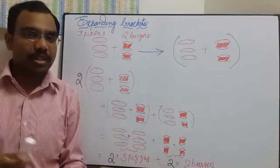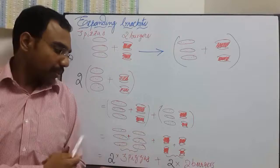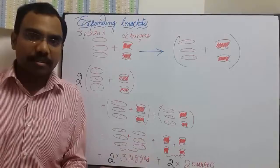Let us consider you have ordered two packets of 3 pizzas and 2 burgers. Mathematically, we can also represent it like this. So two times 3 pizzas and 2 burgers can be written as one packet plus another packet.